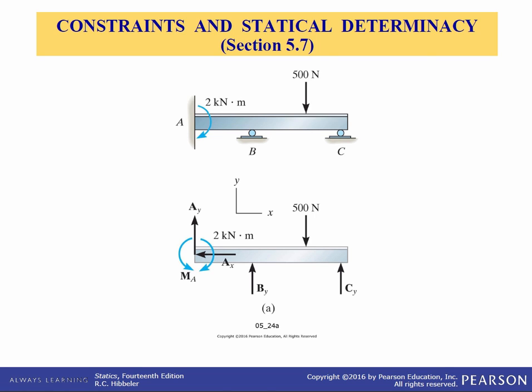Moving into section 5.7, constraints and statical determinacy. To ensure equilibrium of a rigid body, the body must also be properly held or constrained by its supports. Some bodies have more supports than are necessary for equilibrium — these have redundant constraints. When a body has redundant supports, it becomes statically indeterminate, meaning there are more unknown loadings on the body than the equations of equilibrium allow for their solution.